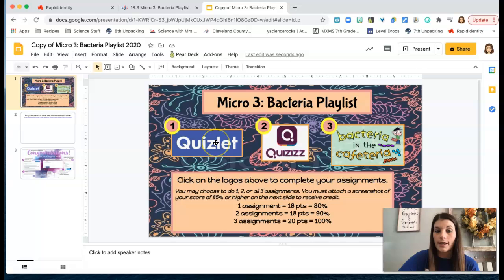So if you are a person that really likes Quizlet, do your Quizlet, take a screenshot of your excellent 85% or higher test score and you will insert that onto slide 2. If you're a fan of Quizizz games you can play this Quizizz game, take a screenshot of your score of 85% or higher. And the third option is called Bacteria in the Cafeteria. It is actually a game. There will be some directions when you link it. At the end of that you will have solved a word puzzle, so screenshot the answer to the word puzzle at the end if you complete that.